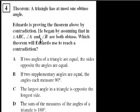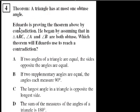We're on problem number four, and they give us a theorem. It says a triangle has, at most, one obtuse angle. Eduardo is proving the theorem above by contradiction. The way you prove by contradiction, you ask: what if this weren't true? Let me prove that that can't happen.